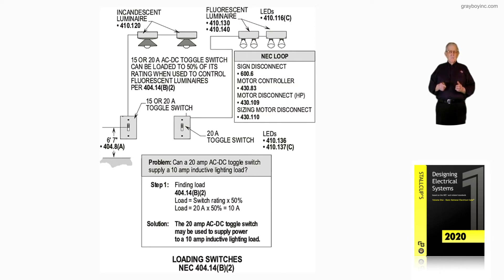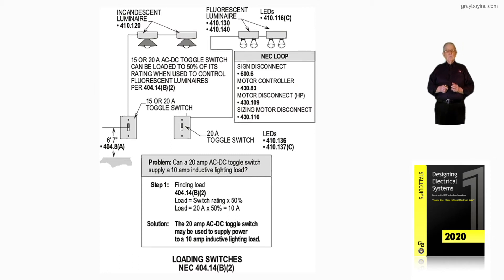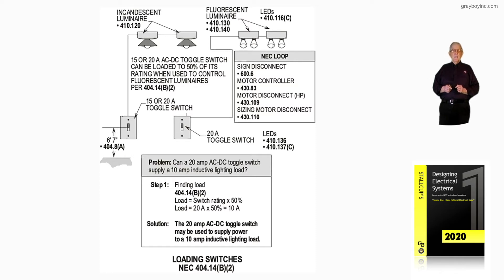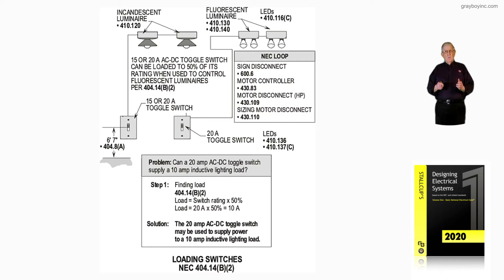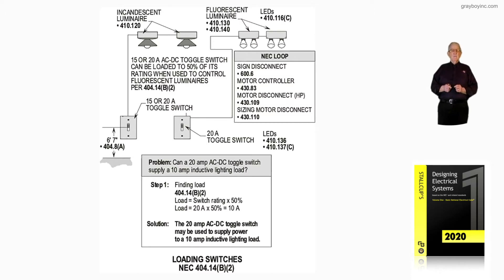We illustrate that in the loop so that it refers you to these sections quickly if that be the case. For LEDs and that type of lighting, you're going to look at 430.136, 410.136, and 410.137C.